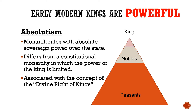Absolute monarchs are different from constitutional monarchy, which emerged in England, where the monarch is constrained by law and constitution. Absolute monarchs are also associated with divine right — the concept that only God can appoint them, that they are second only to God. Early modern absolute rulers closely entwined themselves with the religion of the state, presenting themselves as representatives of both God and the state simultaneously.